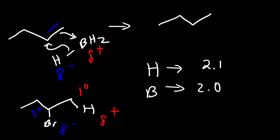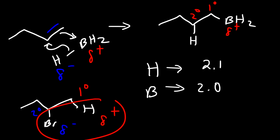We can see the same trend: the partially positive boron atom goes on a primary carbon, and the hydrogen — which was partially negative with respect to boron, not with respect to carbon — goes on a secondary carbon.